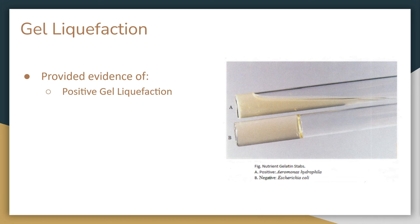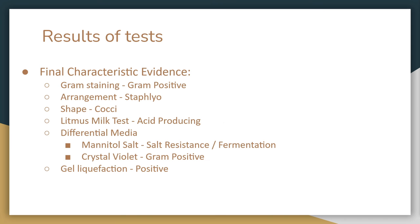Finally, I decided to conduct a gelatin liquefaction test. This came out positive, and once it did, I knew exactly what I was looking for — a gram-positive staphylococci that conducts fermentation, has a high acid output, and a high resilience to salty environments that could liquefy gelatin. There was only one option. Combined with a few other less significant tests, I believe this was enough for my final diagnosis of Staphylococcus aureus.